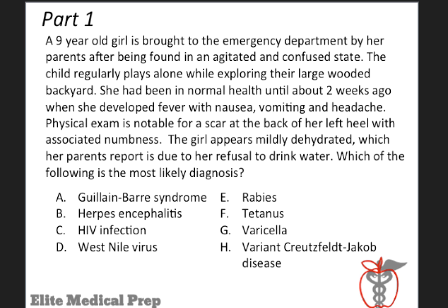We have a number of answer choices. Answer choice A: Guillain-Barré syndrome. Answer choice B: herpes encephalitis. Answer choice C: HIV infection. D: West Nile virus. E: rabies. F: tetanus. G: varicella. And H: variant Creutzfeldt-Jakob disease. Please note that this vignette is the first half of a two-part question, and the second part will come shortly.